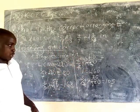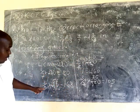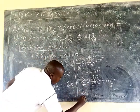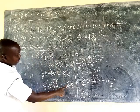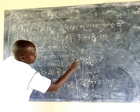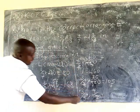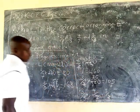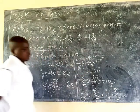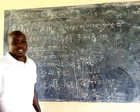Which is the biggest and which is the smallest? The biggest is 168, so the largest fraction is 3/5. Next is 160, which is 4/7. After that comes 3/8 which gives 105. And the smallest is 80, which is 2/7. So the fractions in descending order from biggest to smallest are: 3/5, 4/7, 3/8, 2/7.